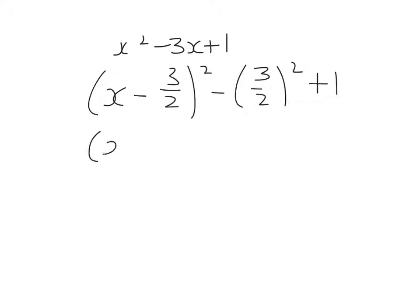That gives me x minus three over two all squared minus nine over four plus one. And if I add one, which is four over four, to minus nine over four, I get minus five over four.